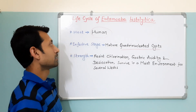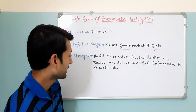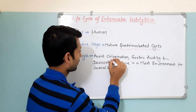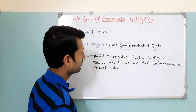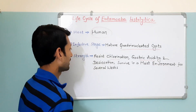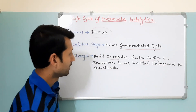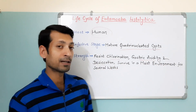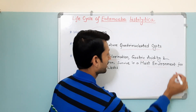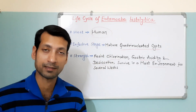The cysts of Entamoeba histolytica can resist chlorination, gastric acidity, and desiccation. They can also survive in a moist environment for several weeks.